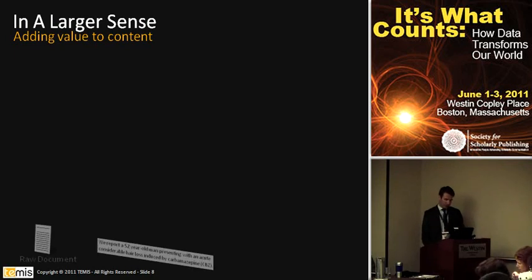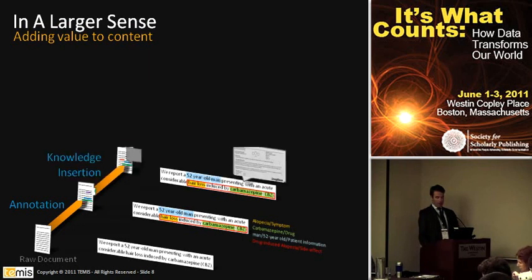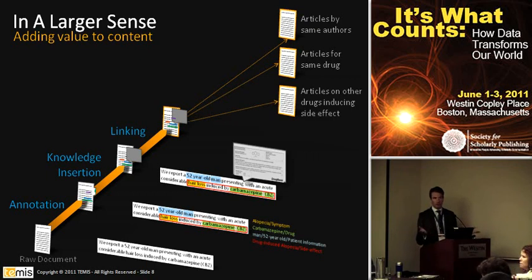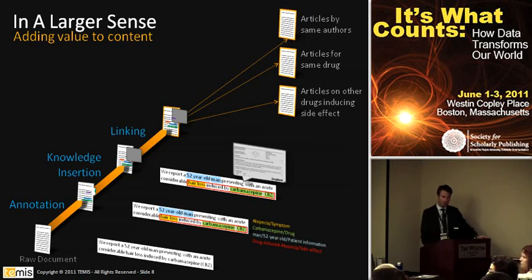So we saw the raw document, the annotation, and the knowledge insertion. The next step is the linking. If we keep that example, you can link on the same authors — this is very easy, it's linking on metadata. You can link on the same drug — more articles related to this drug. Or you can link something a little bit more complex: more articles on different drugs but mentioning the same side effect. Once you have the rich metadata, that's a semantic query in a sense, and it's fairly easy to implement.